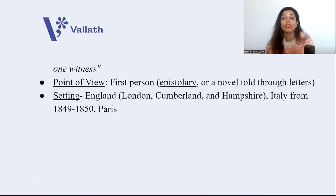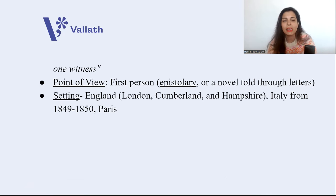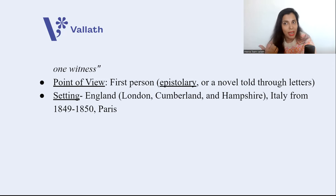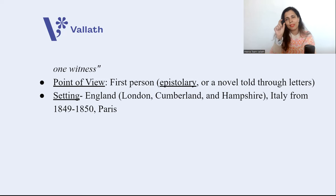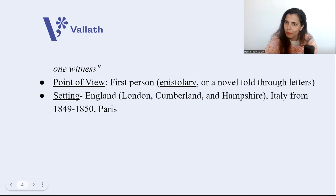An epistolary novel is a novel told through a series of letters or documents. The setting of The Woman in White is primarily England — London, Cumberland, and Hampshire. Another setting is Italy, and a very short span setting is Paris. The time period is 1849 to 1850.